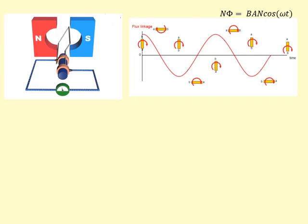This diagram shows a coil spinning inside a magnetic field. This is how AC generators work, like the ones in power stations. As you can see, as the coil spins, the flux linkage through it is changing.